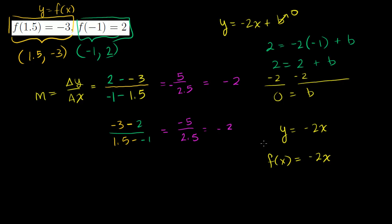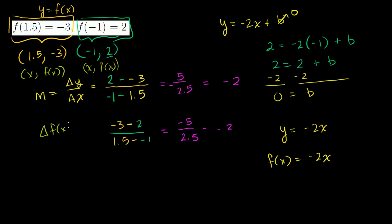They never mentioned y's here, so you could write f(x) = -2x, where each coordinate is a pair of x and f(x) values. You can even view the definition of slope as change in f(x) over change in x. These are all equivalent ways of doing the same thing.